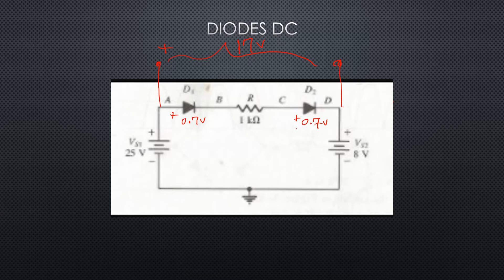If there's 17 volts from point A to point D and we're basically dropping 1.4 volts across the diodes, we know that the resistor voltage V_R is equal to 17 minus 1.4, so 15.6 volts.